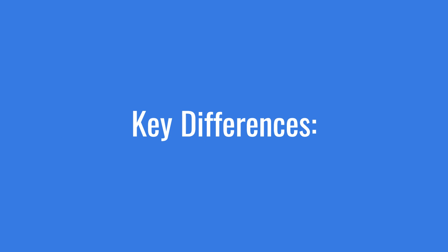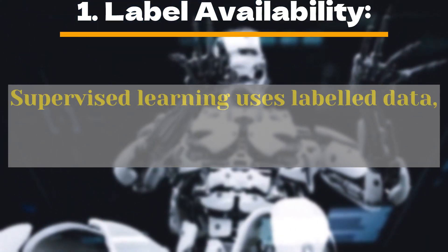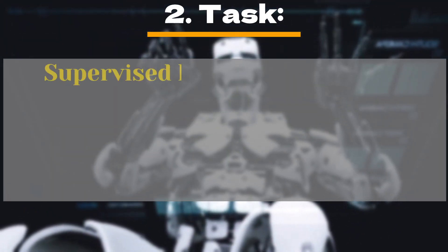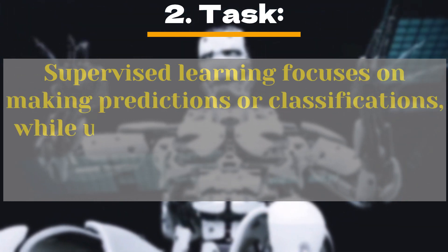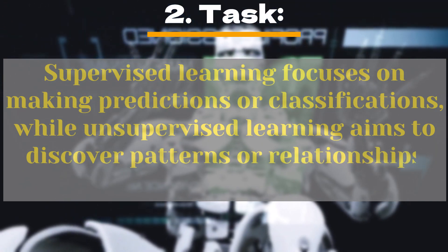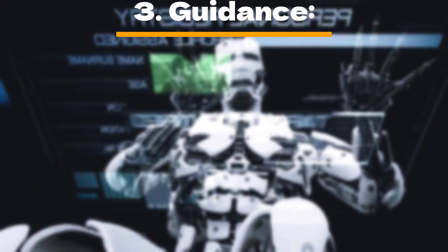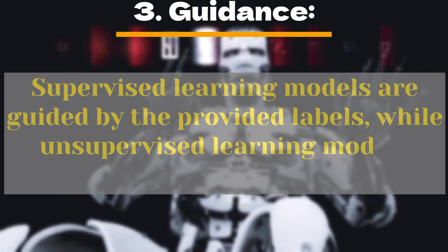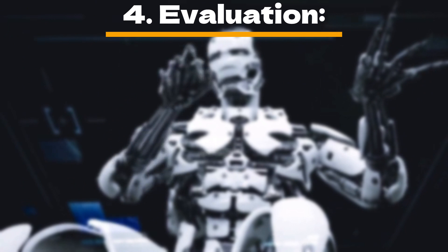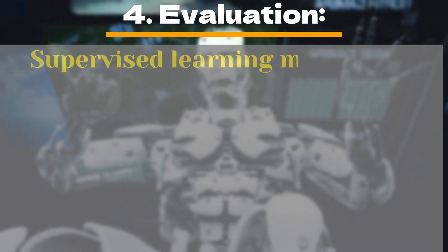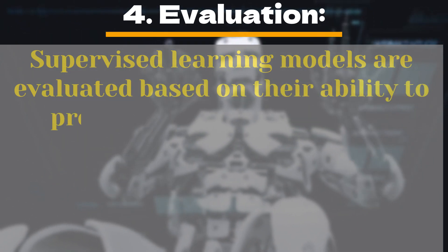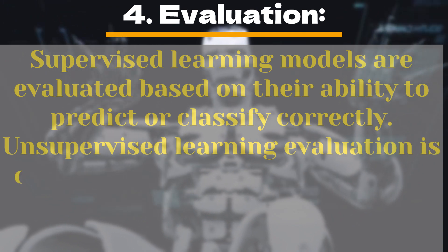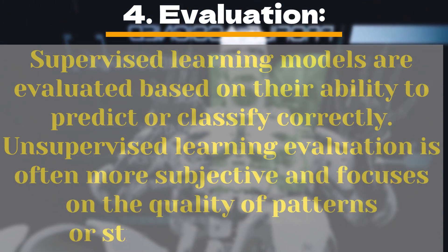Here are some key differences between the two. 1. Label Availability: supervised learning uses labeled data, while unsupervised learning uses unlabeled data. 2. Task: supervised learning focuses on making predictions or classification, while unsupervised learning aims to discover patterns or relationships within the data. 3. Guidance: supervised learning models are guided by the provided labels, while unsupervised learning models operate without explicit guidance. 4. Evaluation: supervised learning models are evaluated based on their ability to predict or classify correctly, while unsupervised learning evaluation is often more subjective and focuses on the quality of patterns or structures discovered.